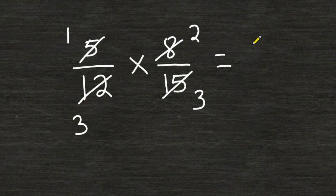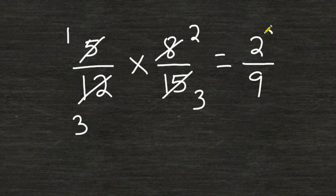Last we multiply our remaining numerators and that would give us 2, and the two denominators at the bottom of 3 would give us a product of 9. So 5/12 multiplied by 8/15 is equal to 2/9.